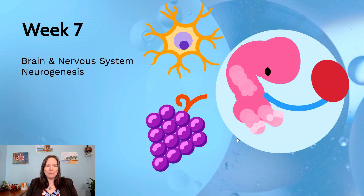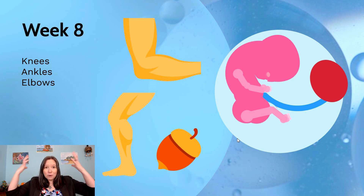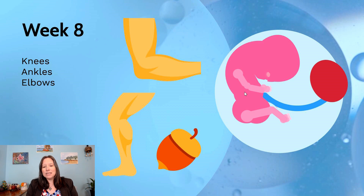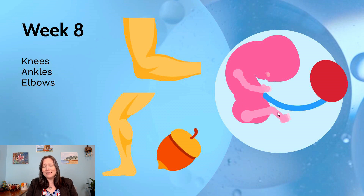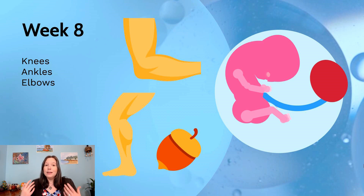The last week of embryonic development is week eight. We're getting a lot more growth in our head, which takes up a much bigger portion of the body than anything else. Our legs and arms are growing quite a bit, and we can see hints of where our shoulders, elbows, knees, and ankles will be. These joints are still quite small and rudimentary compared to an adult's. We're about the size of an acorn or a walnut.